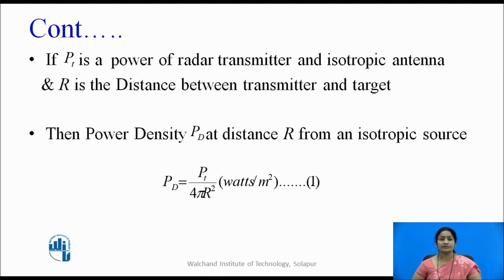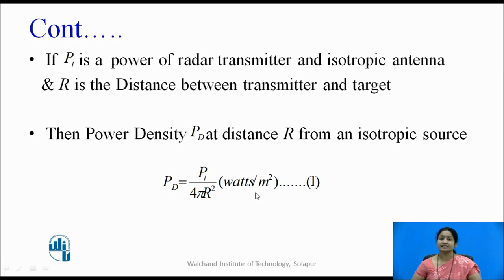Let us consider some entities for the derivation. If Pt is the power transmitted by the radar transmitter and the antenna used is an isotropic antenna, and r is the distance between the transmitter and the target, then the power density at distance r from the isotropic source is given by Pt divided by 4πr², which is the surface area of a sphere of radius r. Power density is measured in watts per meter square.